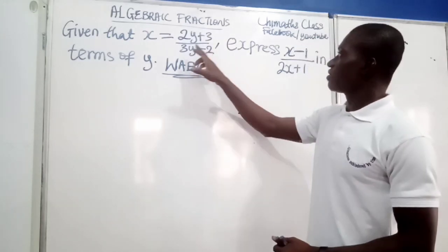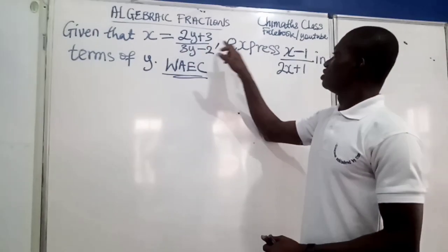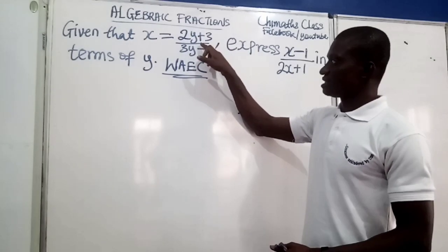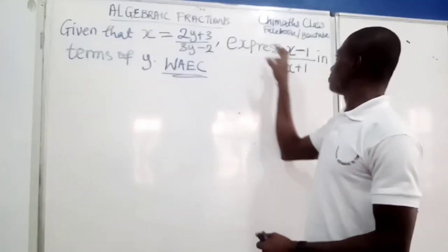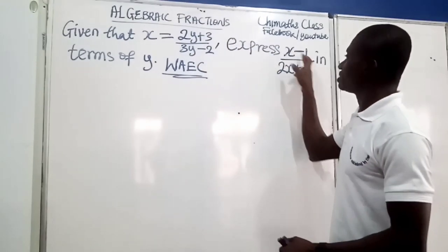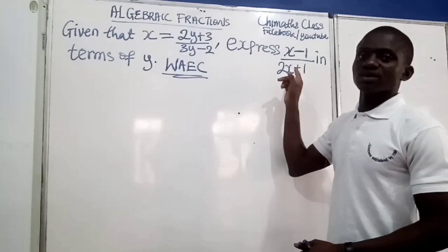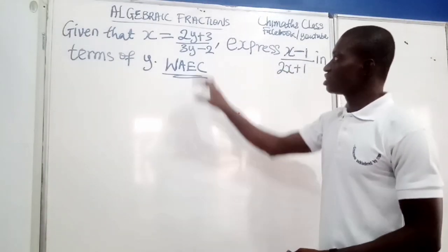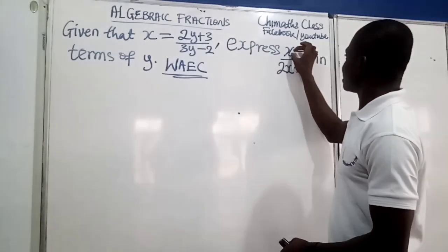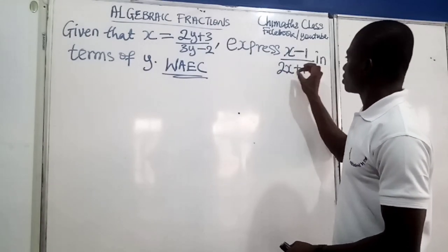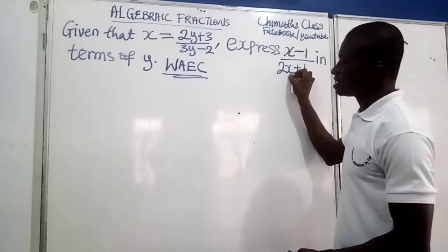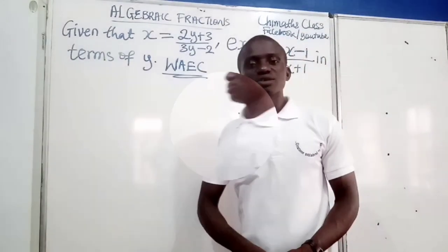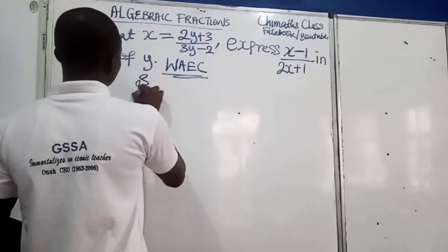Are you getting it? We are required here to take this value of x and use it — we have to replace anywhere we see x in the second expression. We are just going to substitute this value in as x and then simplify the fraction. Solution — let's solve.